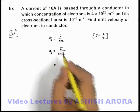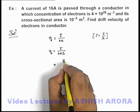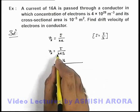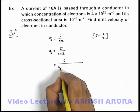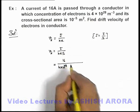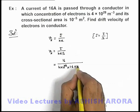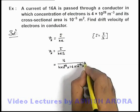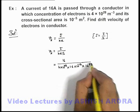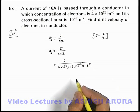Now we can directly substitute the values. Current given here is 16 ampere, free electron density is 4 into 10 to power 28 per meter cube, charge of electron is 1.6 into 10 to power minus 19, and the cross sectional area here is 10 to power minus 5 meter square.